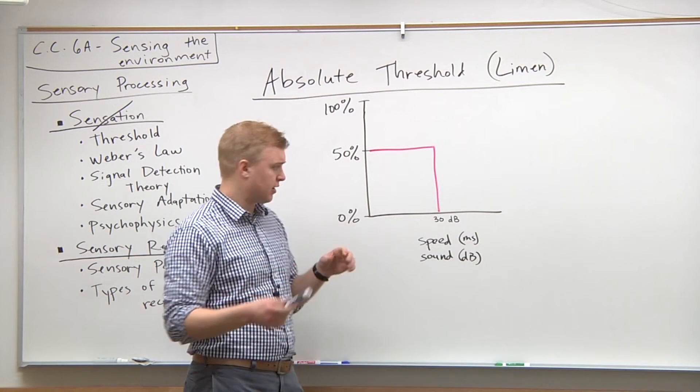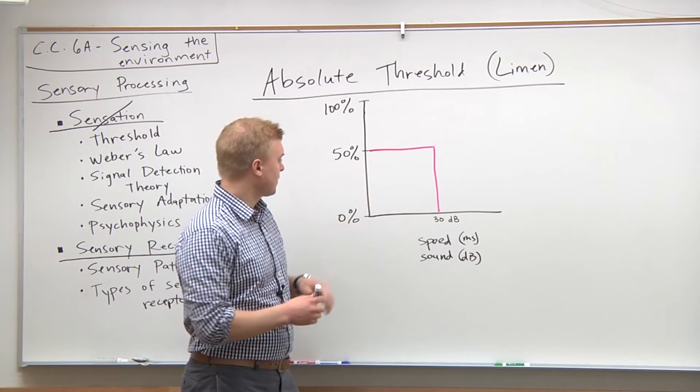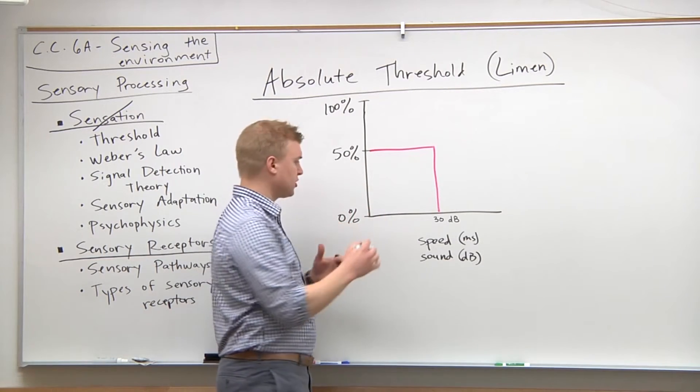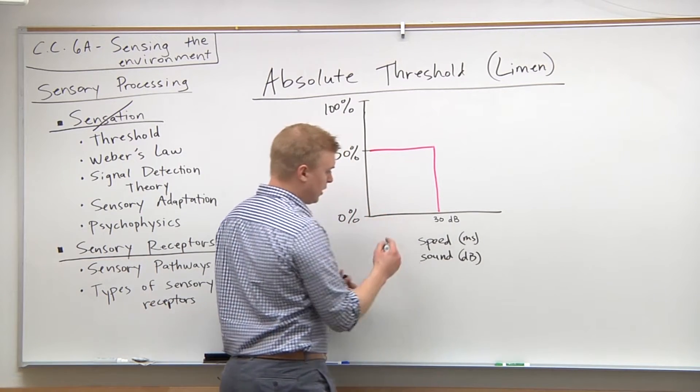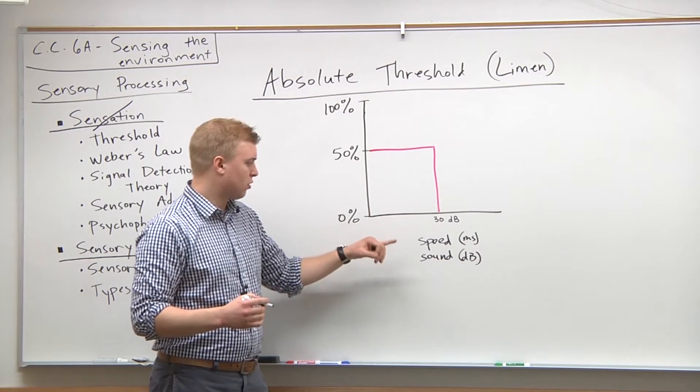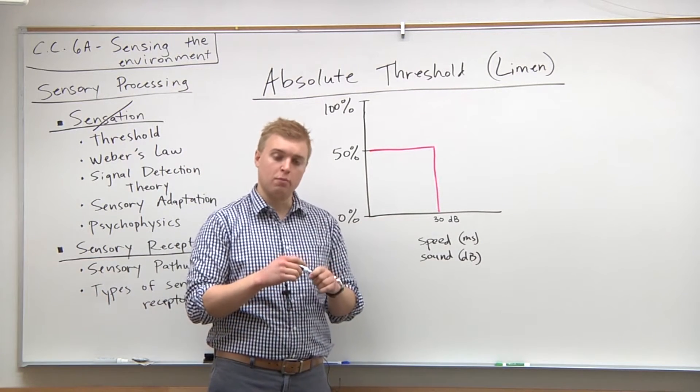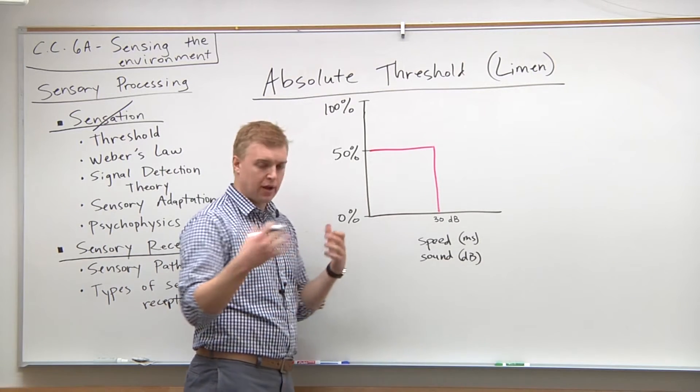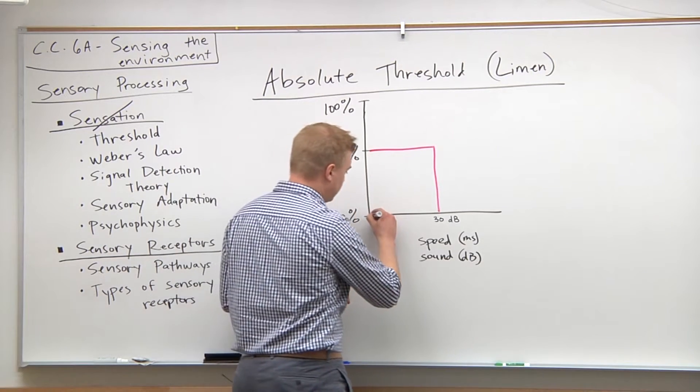Half the time we can't. In these tests to test what the threshold is, they're going to give you either audio or visual messages and see how you respond, see if you answer correctly at least half the time. So it's going to look something like this, just a rough graph here.